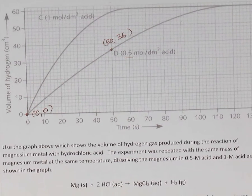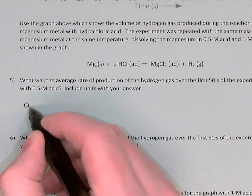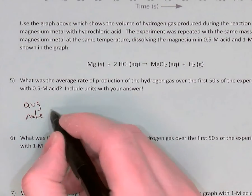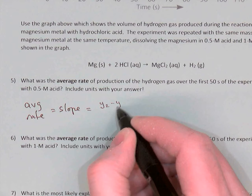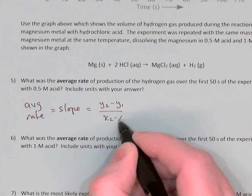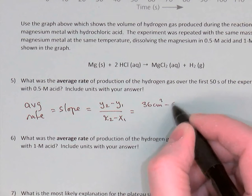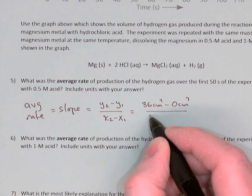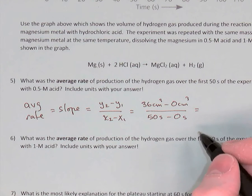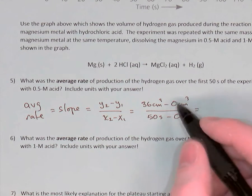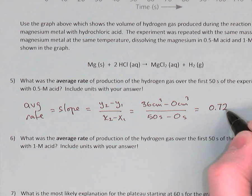Average rate is a slope. I'll calculate the slope between those two points: slope equals the difference in y-values divided by the difference in x-values. The two y-coordinates are 36 cm³ minus 0 cm³, and the times are 50 s minus 0 s. Keeping units in the slope: 36 divided by 50 gives 0.72 cubic centimeters per second.